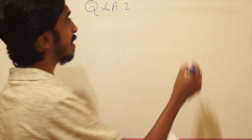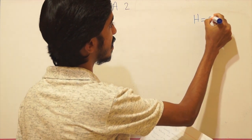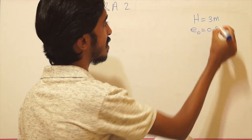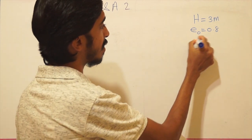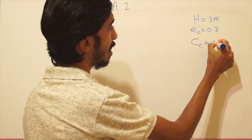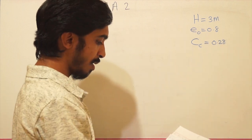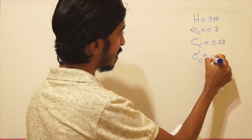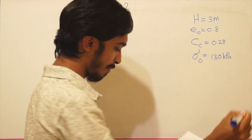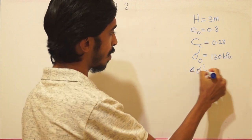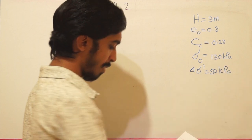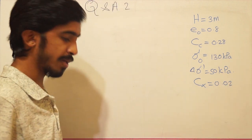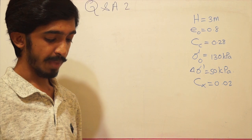From the first question, the data given is: thickness of the layer H = 3 meters, initial void ratio e0 = 0.8, compression index Cc = 0.28, effective pressure on the clay layer = 130 kPa, increase in pressure = 50 kPa, and the secondary consolidation index Cα = 0.02.